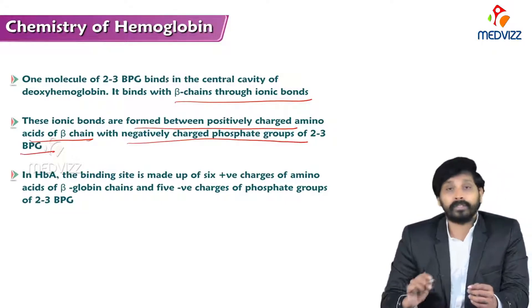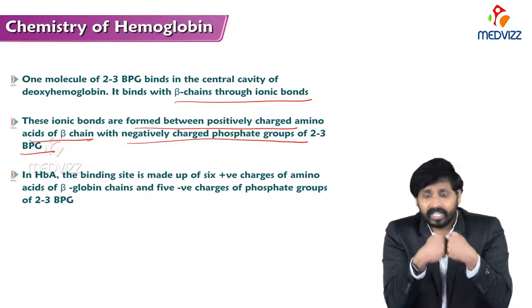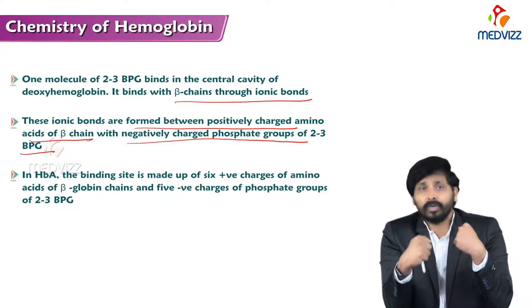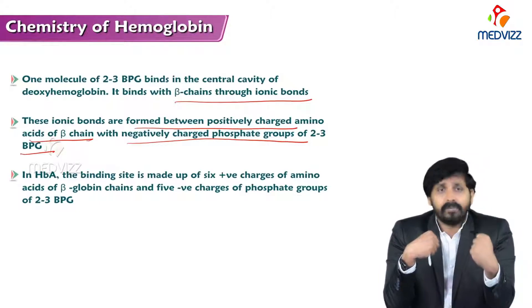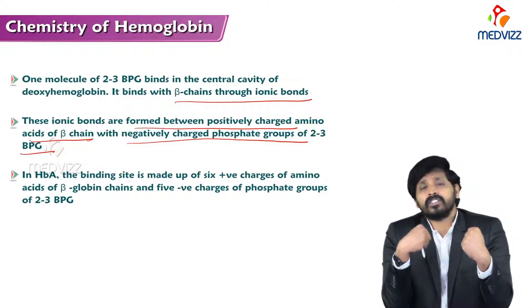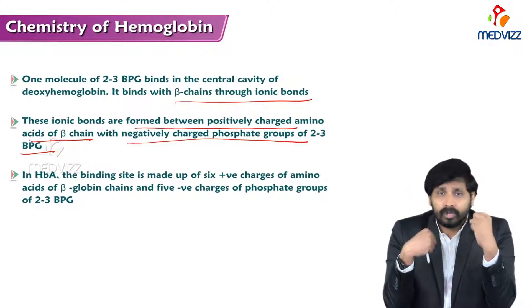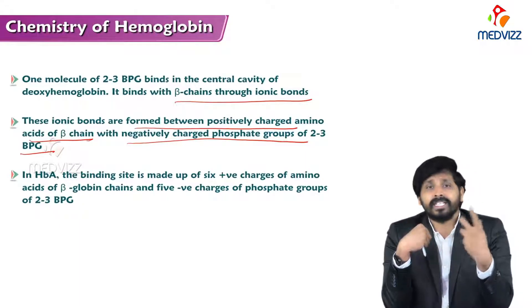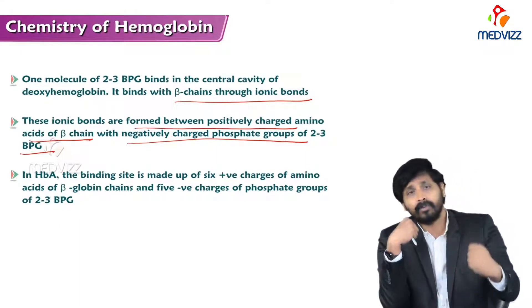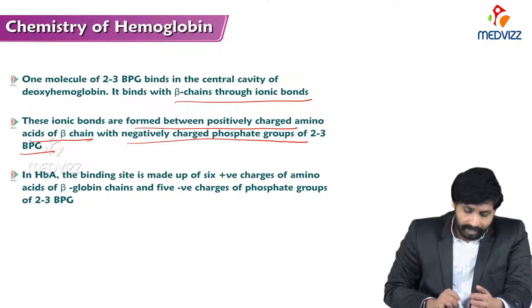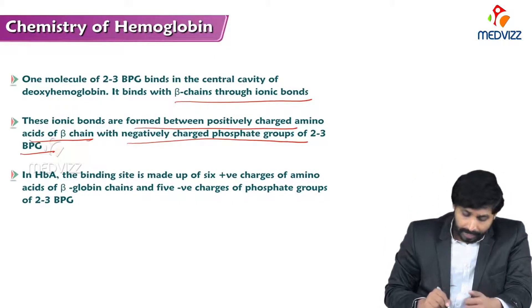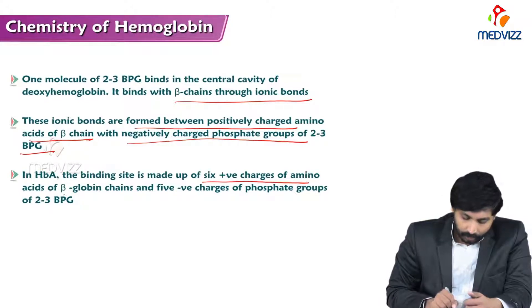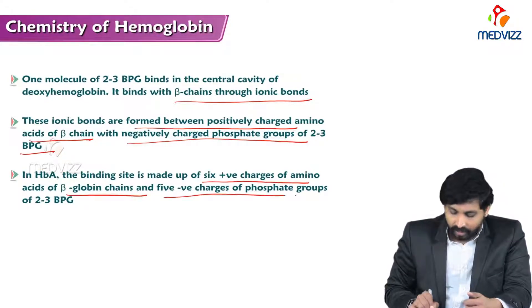These ionic bonds are formed between positively charged amino acids of the beta chain and negatively charged phosphate groups of 2,3-BPG. 2,3-BPG is negatively charged due to its phosphate groups, and the basic amino acids of the globin chains — such as histidine — are positively charged. In adult hemoglobin (HbA), the binding site is made up of six positive charges from amino acids of the beta globin chains and five negative charges from the phosphate groups of 2,3-BPG.